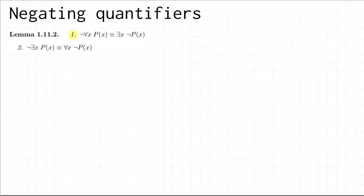Part one says that 'not for all x P(x)' is logically equivalent to 'there exists x not P(x)'. In fact, the similar thing holds for any more complicated statement beginning with a negation of a for-all quantifier. Part two says the same thing only with the existential quantifier instead of the for-all quantifier — it's the same statement as one, except with the existential and for-all swapped.